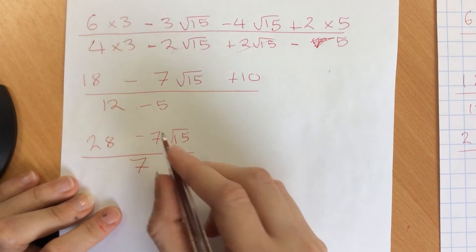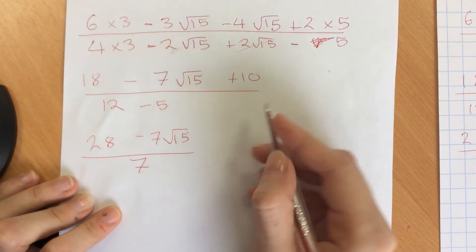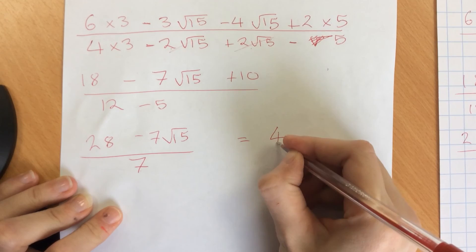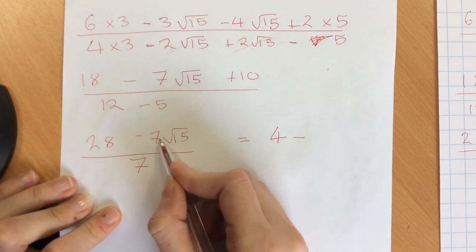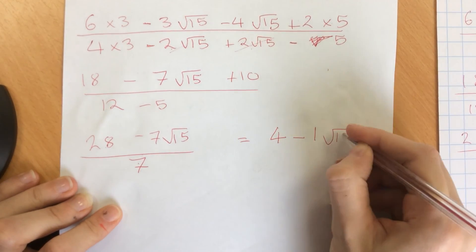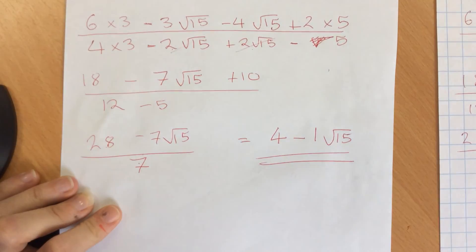Simplifying that further step, because we can divide through by 7, we end up with 4 divided by 7 take away 1 root 15 is my final answer.